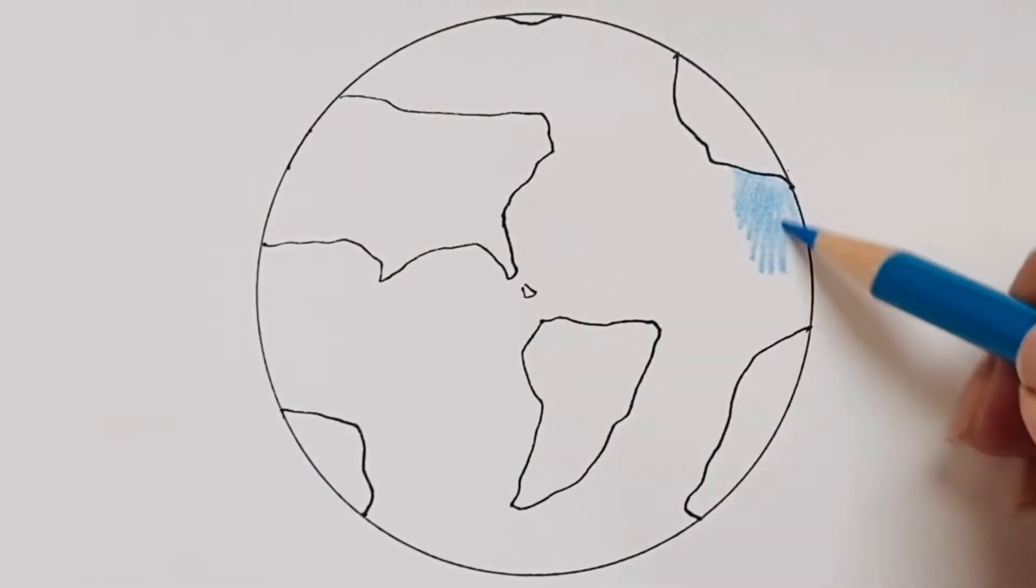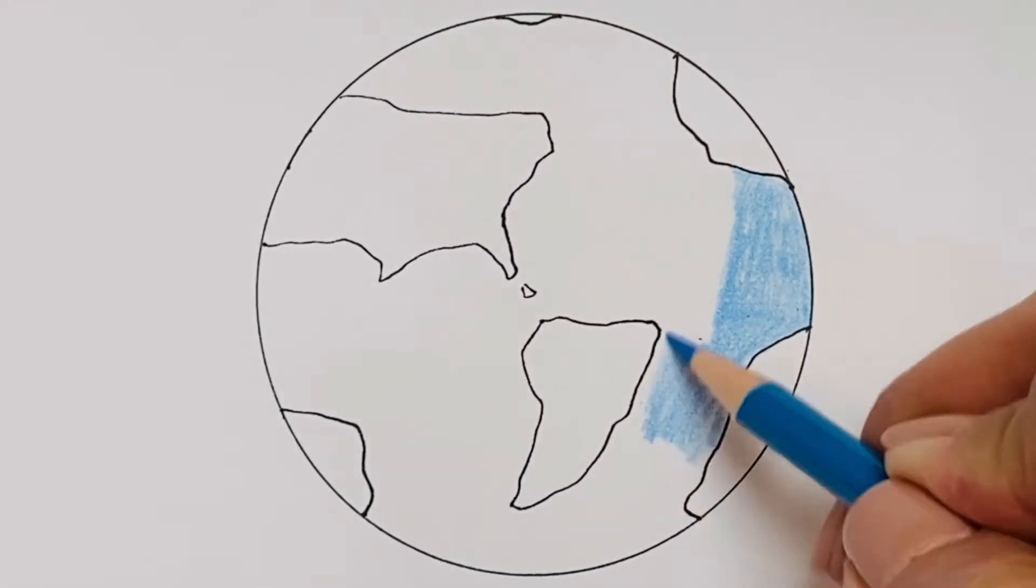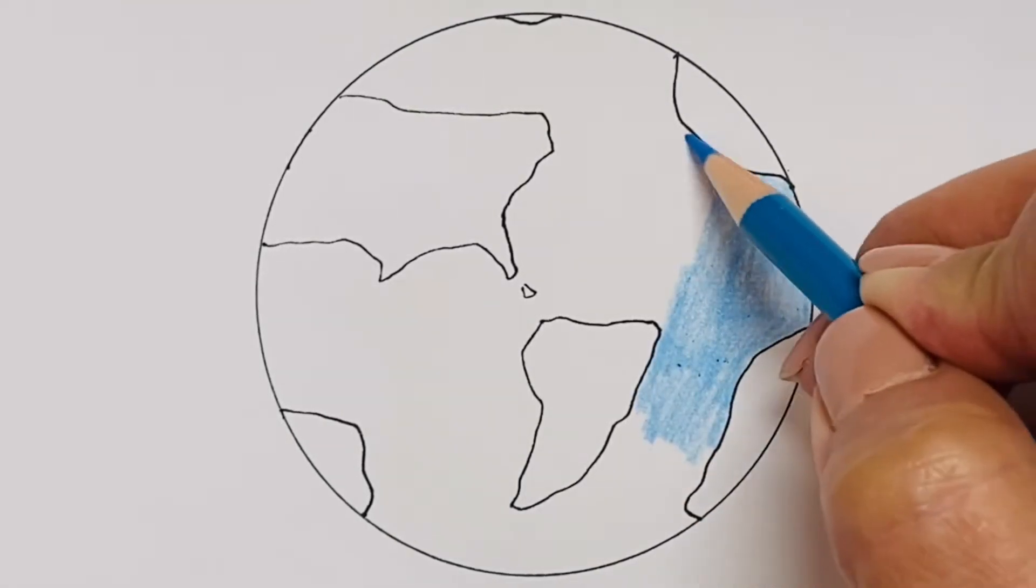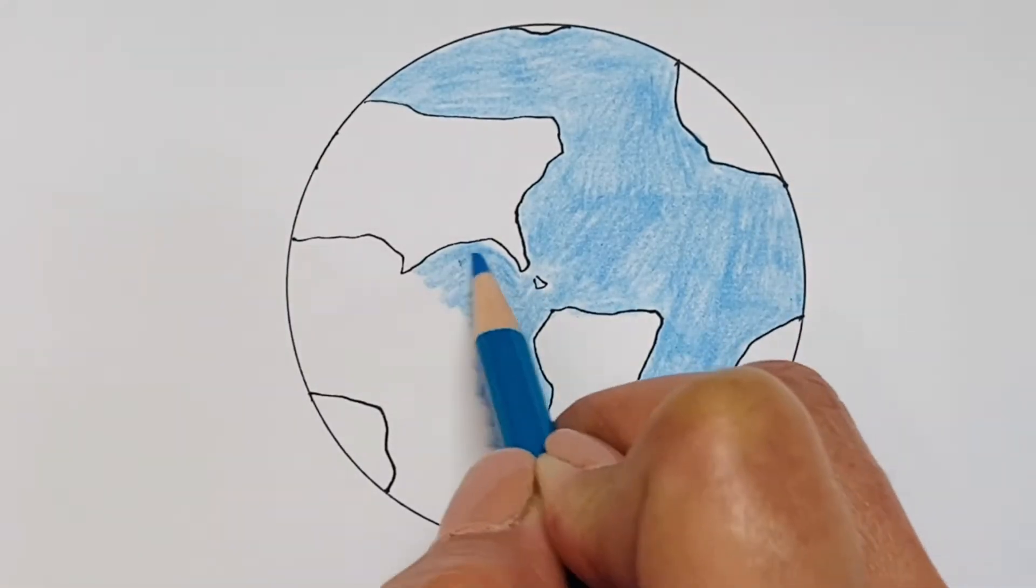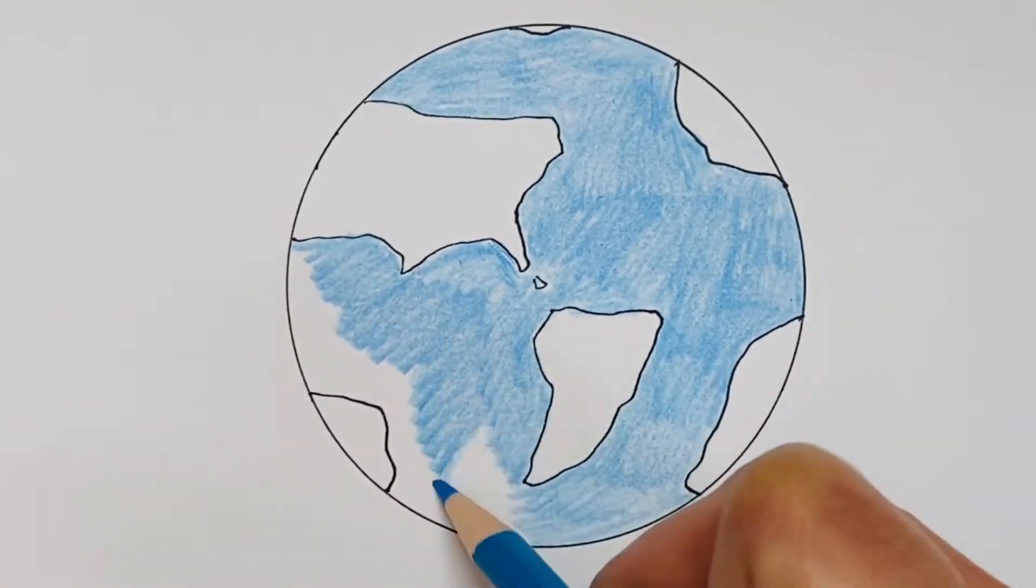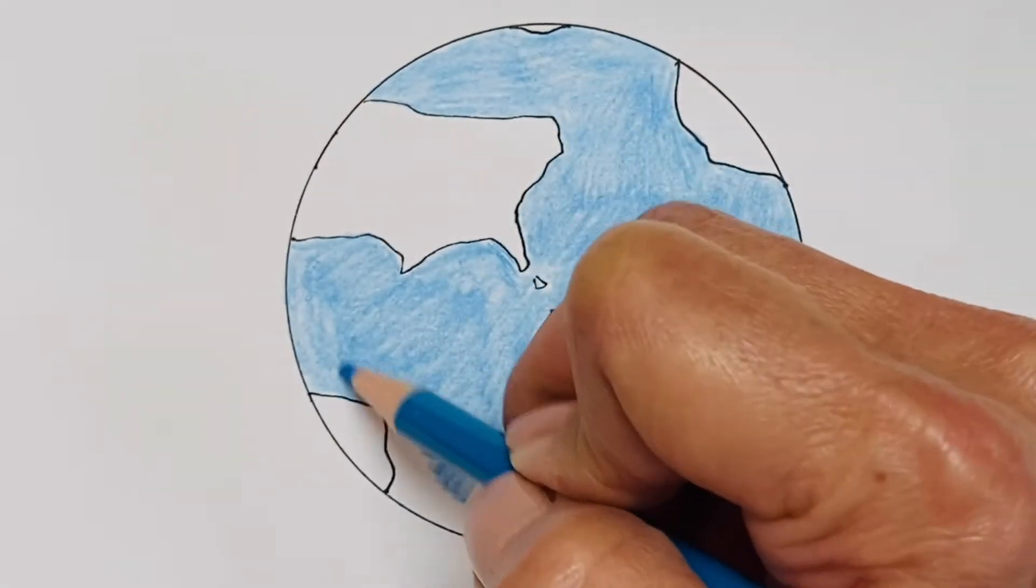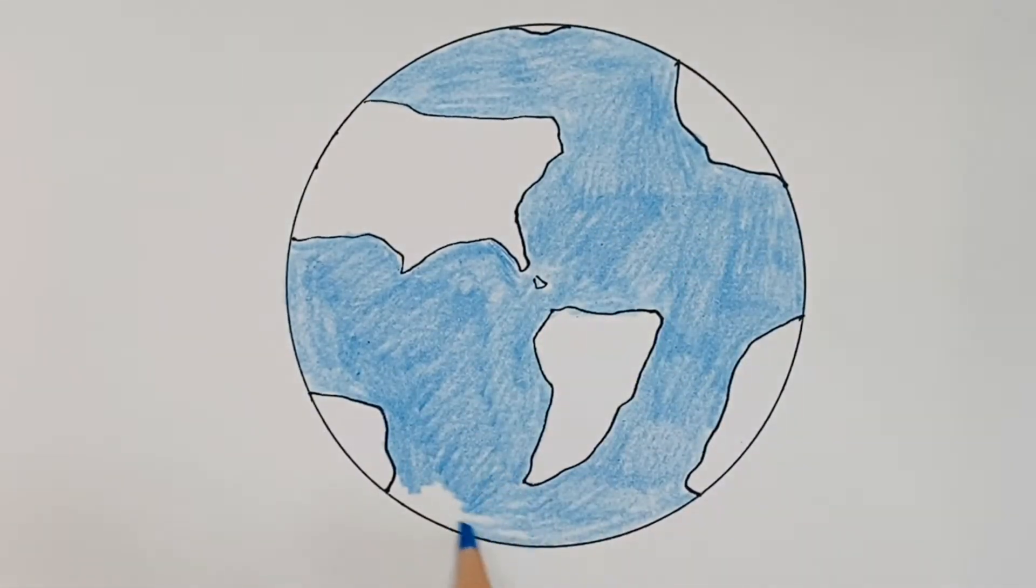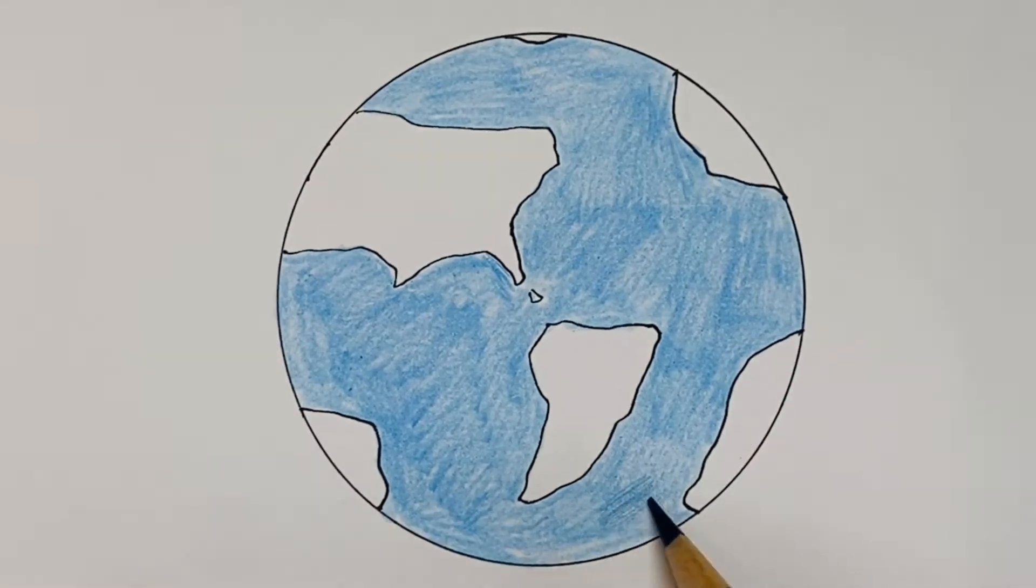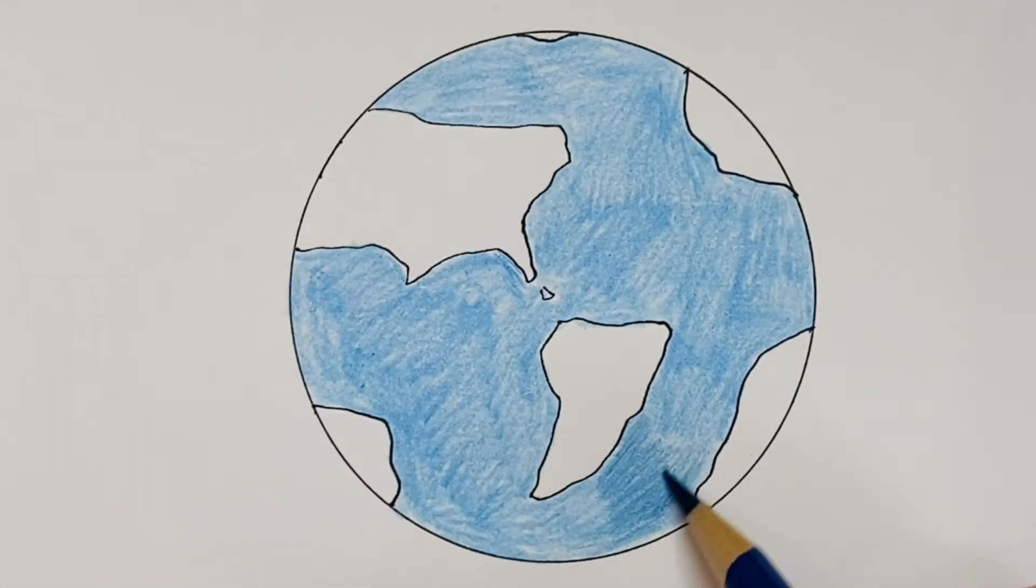So now begin to color. I'm using a blue color pencil and you could make yours fun. You could make it any blue you like. Just like this, and then I'm going to pick up a darker blue to add a little bit of contrast, like I'm doing here, because the water has different tones of blue.